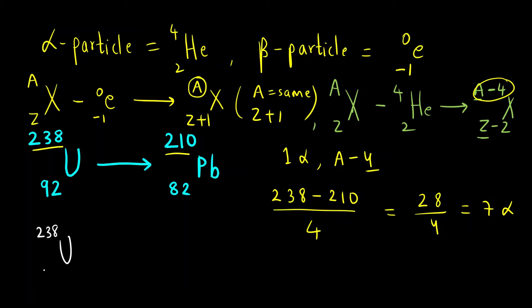We can now write down the equation. U-238 with atomic number 92, I am removing 7 alpha particles, which are helium nuclei. What I will get? 238 minus 7 times 4 is 28, so 238 minus 28. 8 minus 8 is 0, 3 minus 2 is 1, 2 minus 0 is 2, so 210.